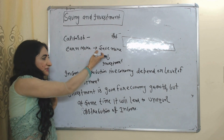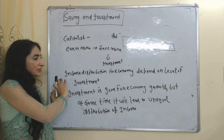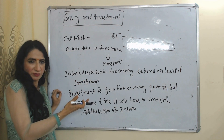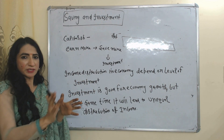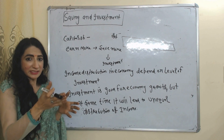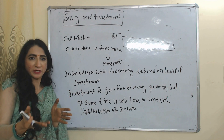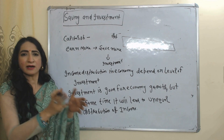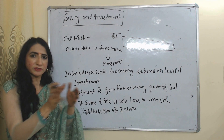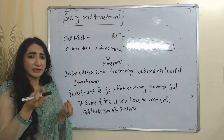The next thing that affects income distribution is saving and investment. Capitalists earn more, save more, and with these savings they do investment. Income distribution in the economy depends on the level of investment. No doubt investment is good for economic growth, but at the same time it leads to unequal distribution of income, as more and more income goes into the hands of the higher capitalist class.